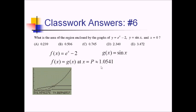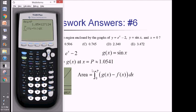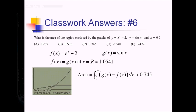So these intersect at x equals P, approximately 1.0541. The integral runs from 0 to P. For top minus bottom: the exponential was underneath and sine was on top, so the integrand is g of x minus f of x dx, giving positive values on this interval. On the calculator, with y2 as g of x and y1 as f of x, this evaluates to 0.745, which gives us choice C.